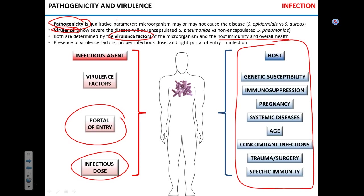From the host side, genetic susceptibility influences virulence. Plague is not as virulent as it was 700 years ago because epidemics killed people who were most genetically sensitive to it, essentially weeding them out. Immunosuppression also makes a big difference — an infection that causes a common cold can lead to devastating pneumonia in immunosuppressed people. Pregnancy also affects the course of infection because during pregnancy women are slightly immunosuppressed, so some infections may be more severe.